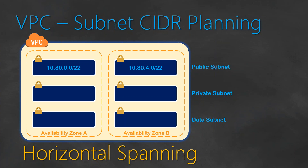So in total for the public subnet alone, we have a continuous space of 2048 IP addresses spanning both zones. Then likewise for the private subnet, we continuously start at 10.0.8.0 in availability zone A and continue at 10.0.12.0 in availability zone B. For the data subnet, we start at 10.0.16.0 and continue at 10.0.20.0. This is how horizontal spanning works — IP addresses are assigned in a continuous horizontal manner across subnets and availability zones.